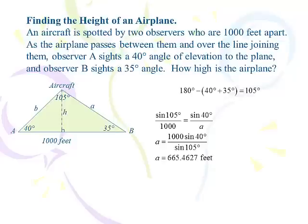So, we're here to find h. What we have to find is either a or b first. Now, you can find a or b. It won't make any difference. I'm going to go ahead and find a, but we just as easily could have found b. And so, I set up the sine of 105 degrees over 1,000 is equal to the sine of 40 degrees over a. I cross multiply and divide, and I get a to be about 665.5 feet.